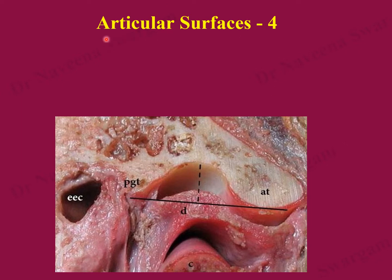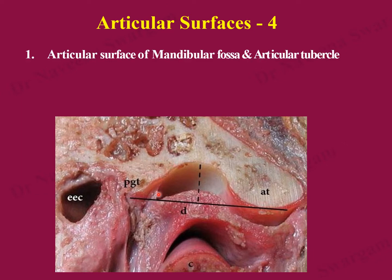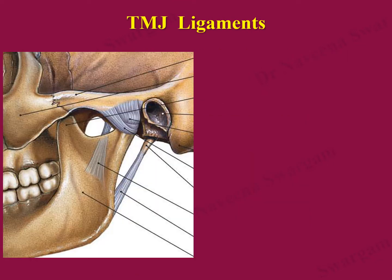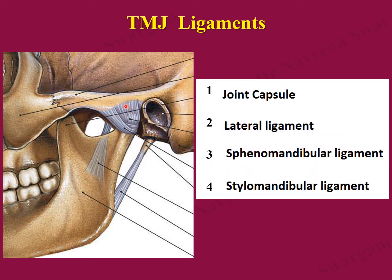Due to the presence of the articular disc, the joint shows four articular surfaces: a convex or concave articular surface above formed by the temporal bone, a concave or convex upper surface of the articular disc, a concave lower surface of the articular disc, and a convex articular surface formed by the head of the mandible below.